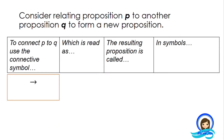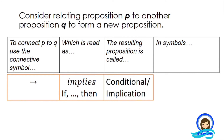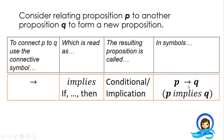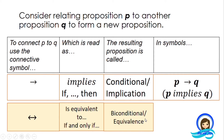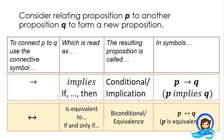Then we have the arrow, read as 'implies' or 'if...then.' The resulting proposition is called conditional or implication, written as 'P implies Q.' And for the biconditional symbol, read as 'is equivalent to' or 'if and only if,' the resulting proposition is called biconditional or equivalence, written as 'P is equivalent to Q.' Basically, we have learned five connective symbols, and let's try to apply those in our next activity.